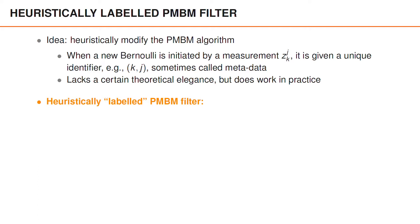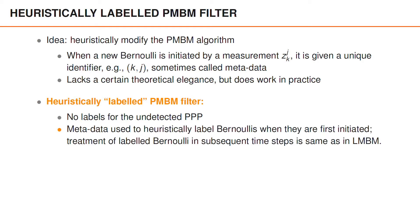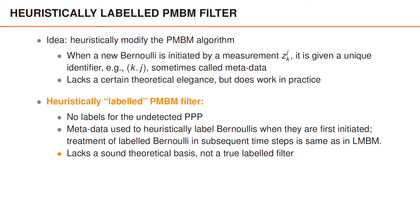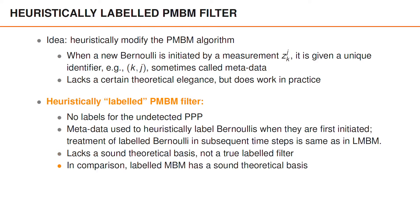So we can call this a heuristically "labeled" PMBM filter — notice that we put labeled in quote marks. This is to emphasize that this is not a labeled filter in the true sense of the word. In this filter, we would not have any labels for the undetected Poisson point process. The metadata would be used to heuristically label the Bernoullis when they are first initiated. However, it's only the first assignment of the metadata as label that is heuristic. The treatment in all subsequent time steps is the same as in the LMBM.